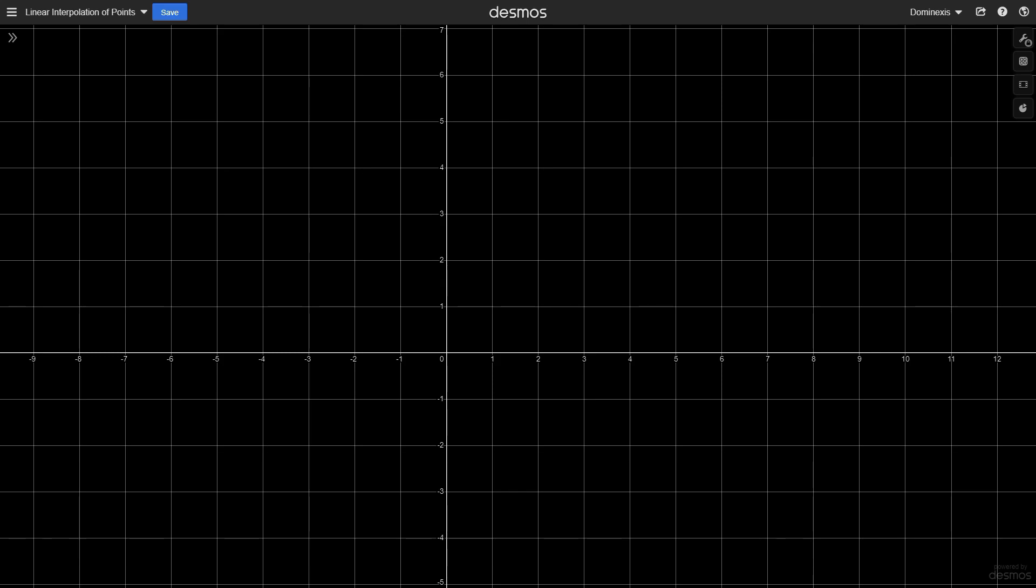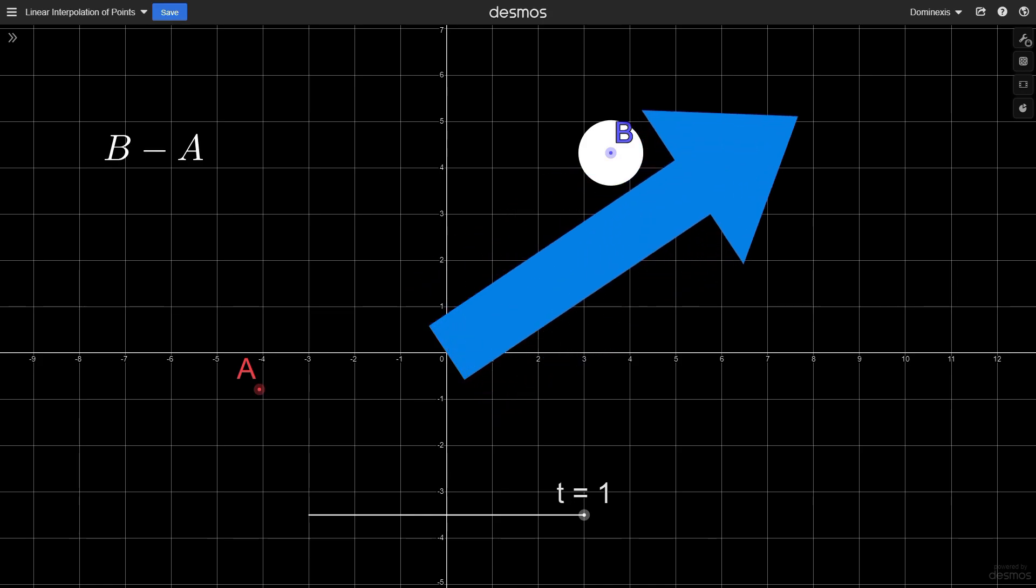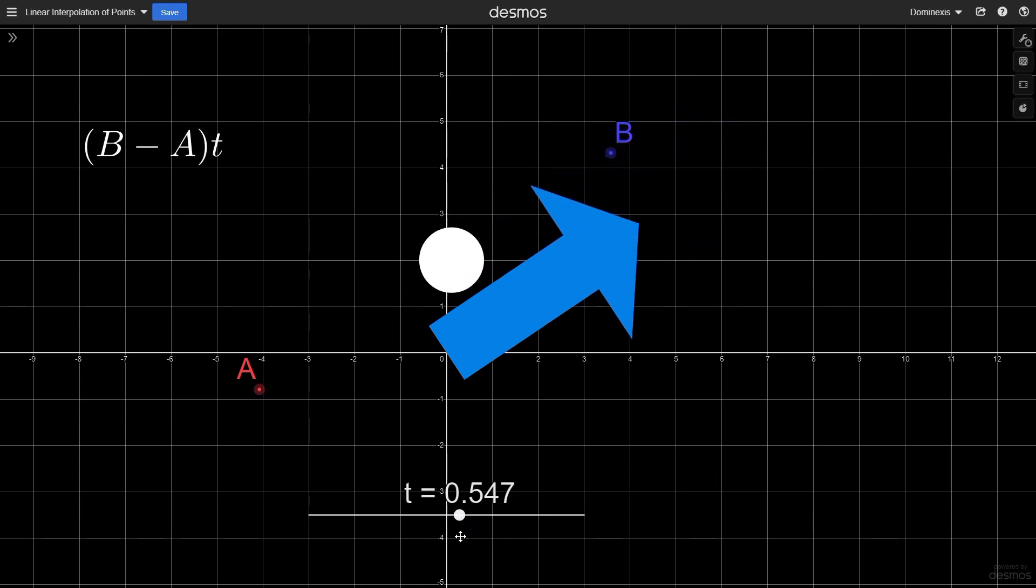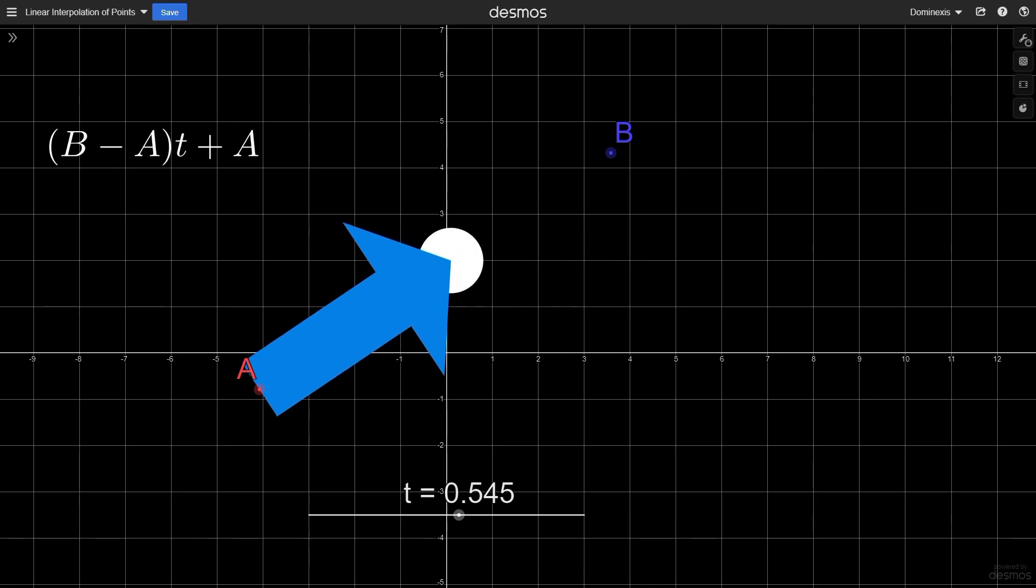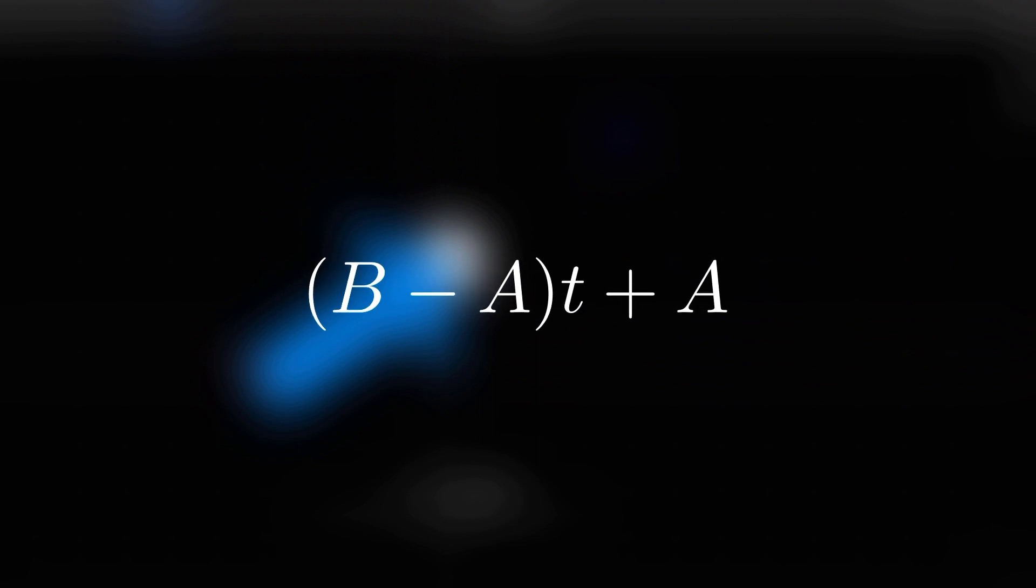But before we get into rotation, let's first talk about interpolation, moving one point to another. So we have a point A and a point B. We want to move a point from A to B based on a value T from 0 to 1. To do this, we start with the difference between A and B, that is the vector pointing from A to B. We then scale this vector using T. Finally, we add the vector to A to bring it into position, and voila, we have a linear interpolation.